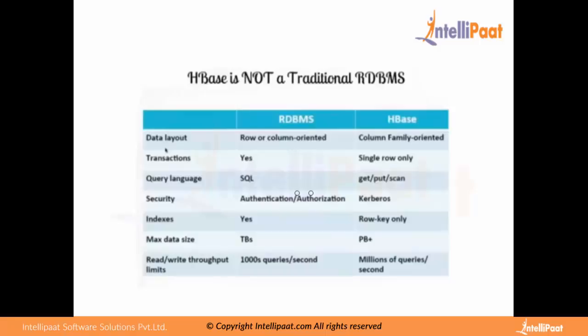For security, RDBMS uses authentication and authorization — typically username and password. HBase uses Kerberos. For indexes, RDBMS supports full indexing while in HBase you can build indexes only on the row key. The maximum data size an RDBMS can handle is terabytes, whereas HBase can handle petabytes and beyond. When you have petabyte-scale data, RDBMS won't even cater to that requirement.